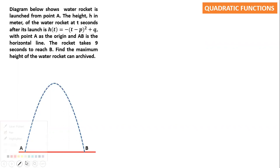Let us start. Let me read the question slowly, then try to understand one by one. A diagram below shows a rocket launched from point A. The height h in meters of the water rocket at t seconds — that means for any t, you will have the h. So h is the height and t is the time for our equation. The equation is already given here — let me highlight it for you.